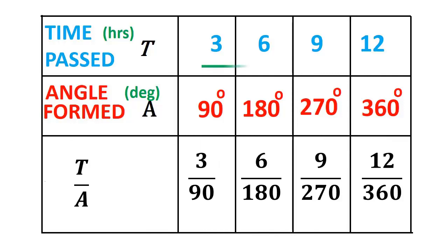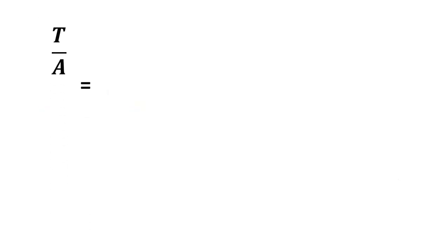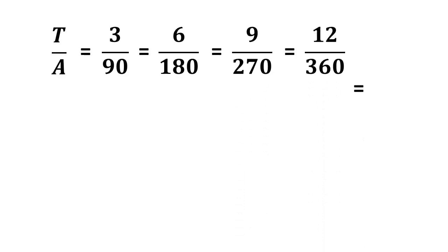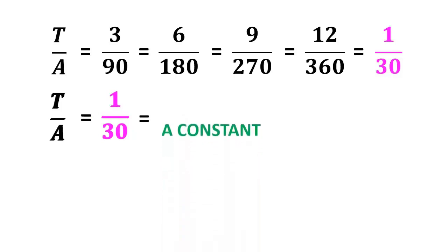Here, we observe that as the time increases, the degree of the angle also increases. By simplifying every ratio in t by a, we get one by thirty. That is, t by a is a constant. Therefore, we can say that t is directly proportional to a.